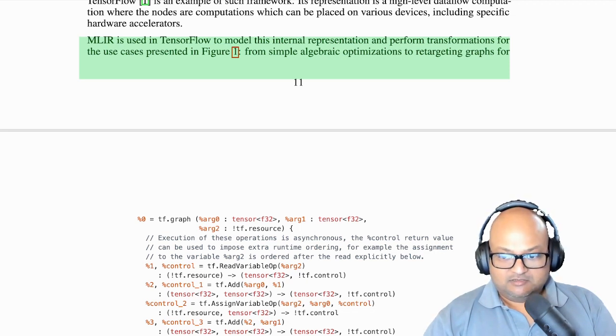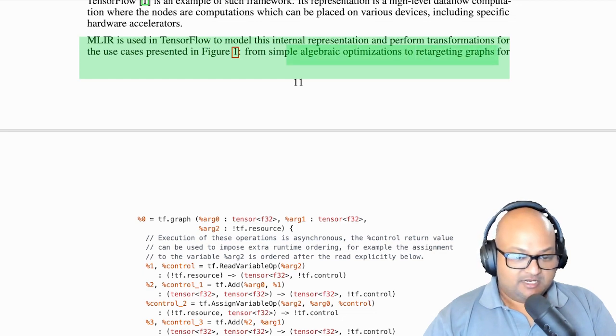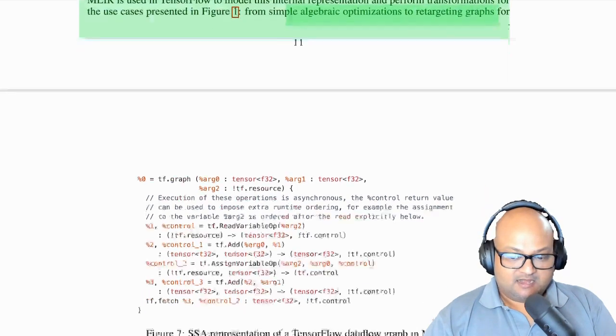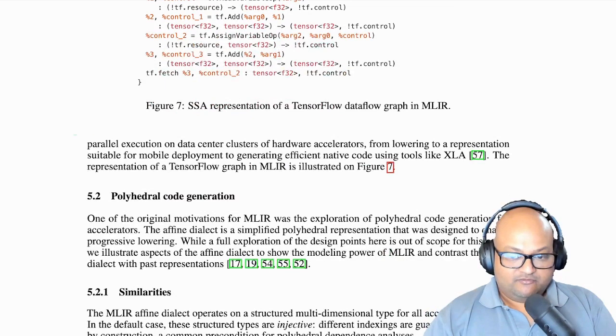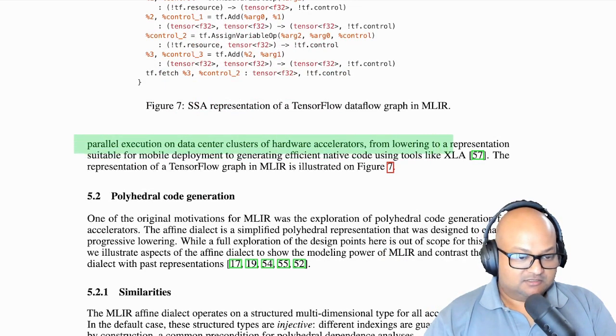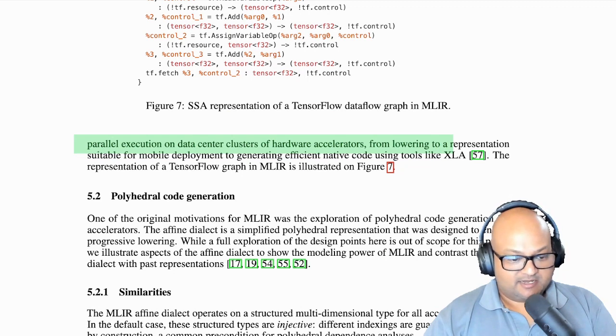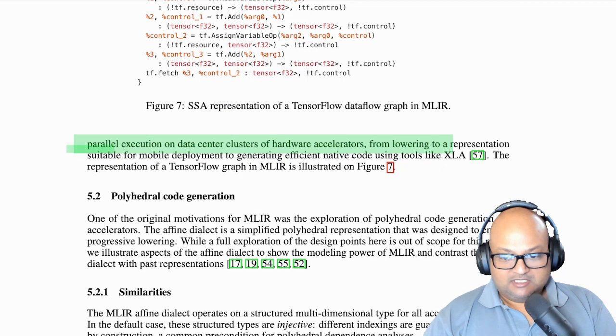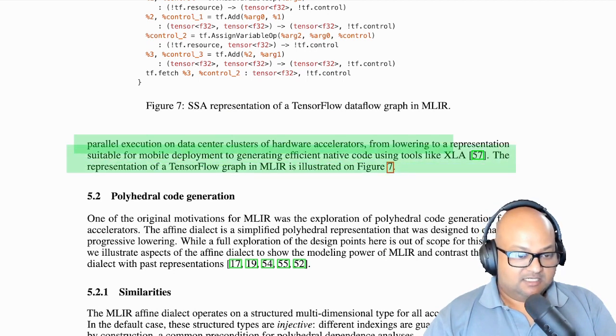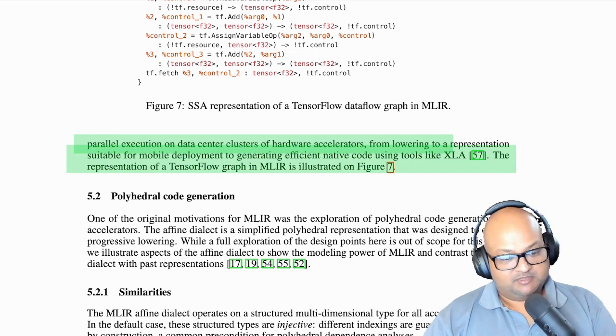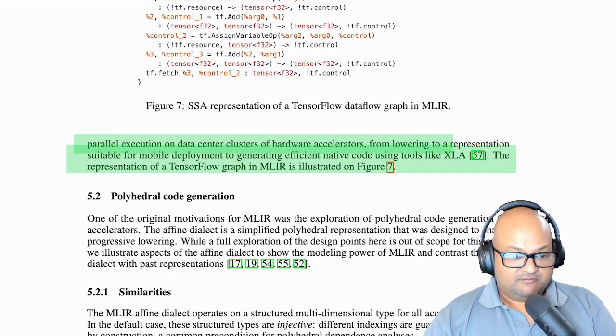Essentially, you can do not only simple algebraic optimizations, but you could also retarget graphs, entire machine learning workflows for parallel execution on data centers or clusters of hardware accelerators like the tensor processing units that Google has. And all this can be modeled in one uniform and consistent intermediate representation instead of a disparate collection of many different runtimes and compiler stacks.